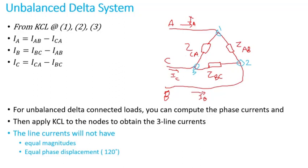If you do KCL at nodes one, two, three, assuming current is flowing in these directions, the line current I_A is equal to phase current I_AB minus I_CA. So I_A is entering node one, I_AB is exiting, and I_CA is also entering. You do the same thing for I_B and I_C, so basically you get these three equations.